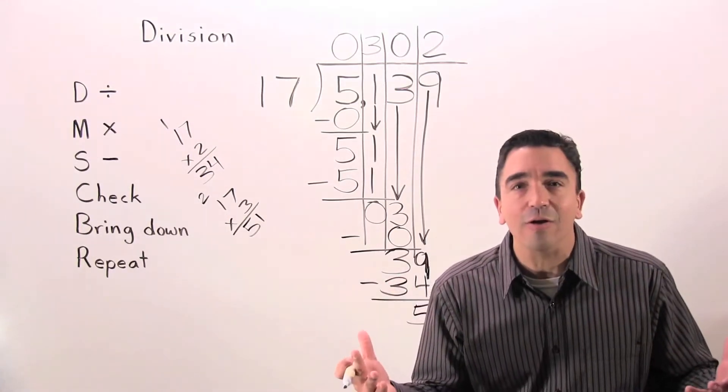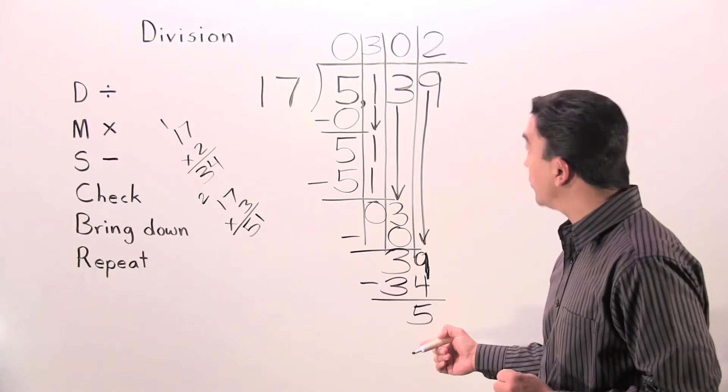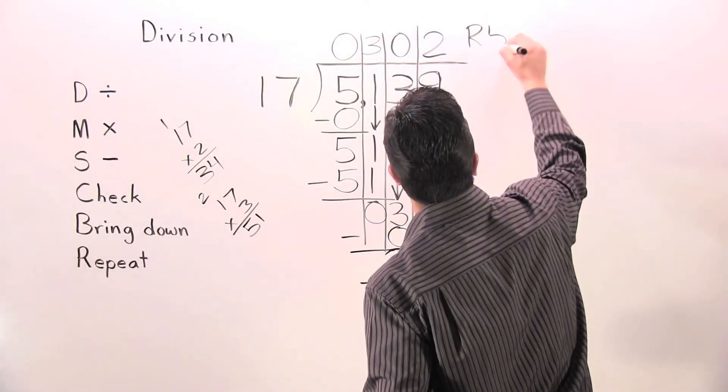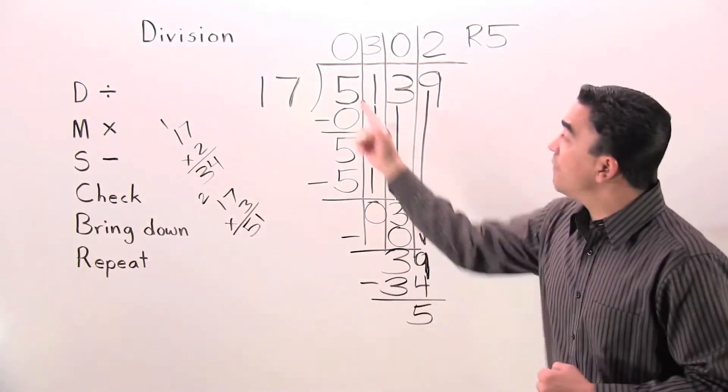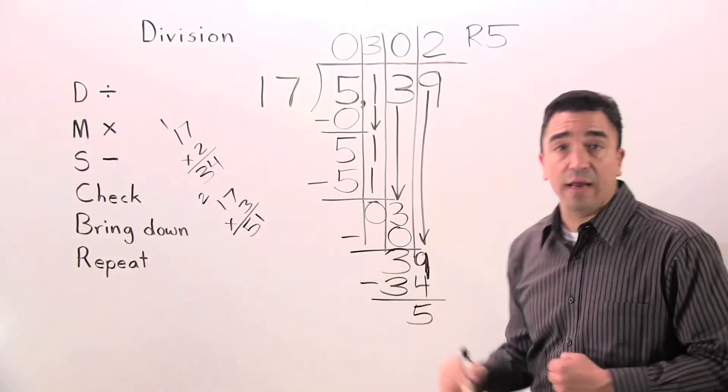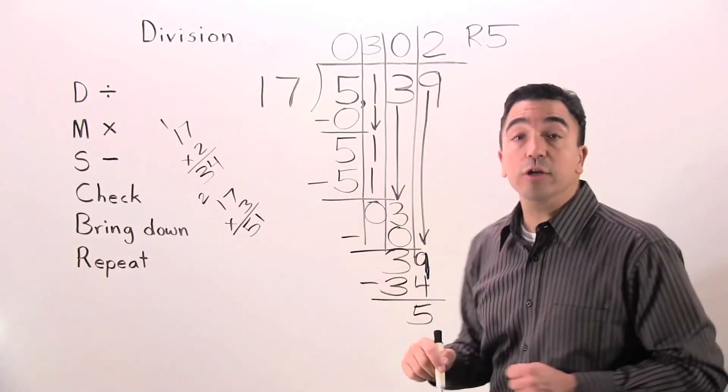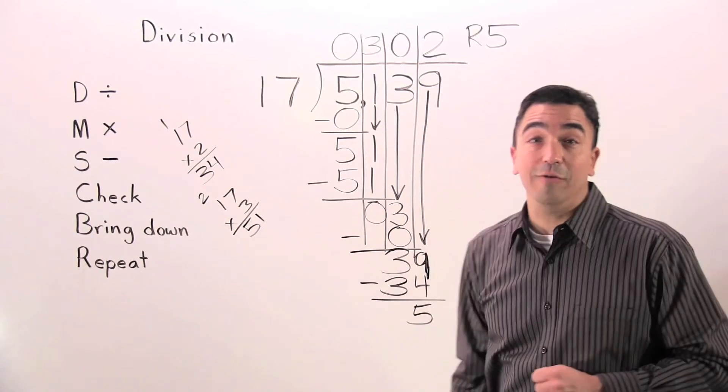There's nothing there. Therefore, we have a remainder of 5. 5,139 divided by 17 gives us a quotient of 302. Remainder 5.